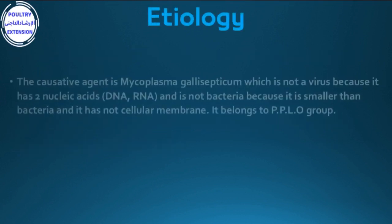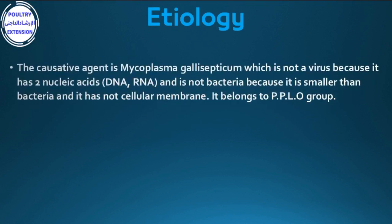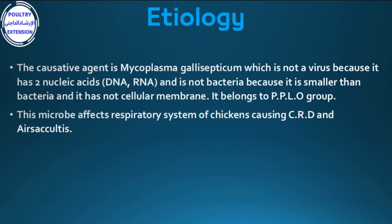Etiology: the causative agent is Mycoplasma gallisepticum, which is not a virus because it has two nucleic acids — DNA and RNA — and not a bacteria because it is smaller than bacteria and has no cellular membrane. It belongs to the PPLO group. This microbe affects the respiratory system of chickens, causing CRD and air sacculitis.